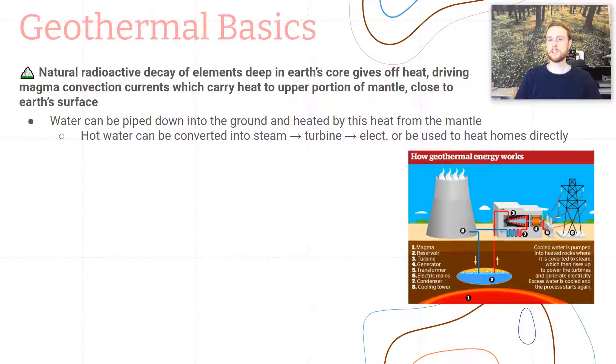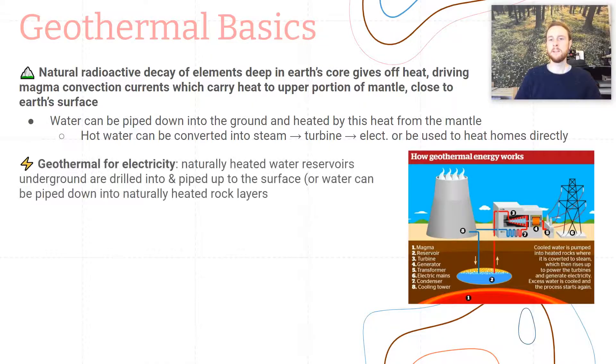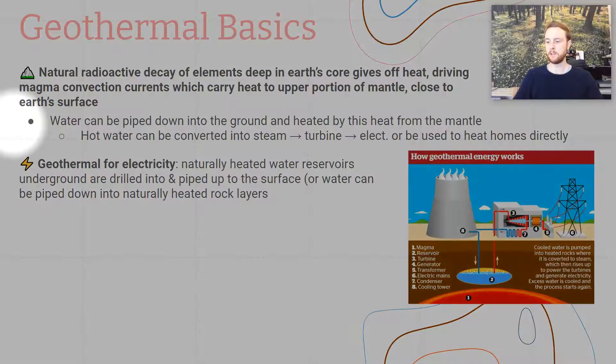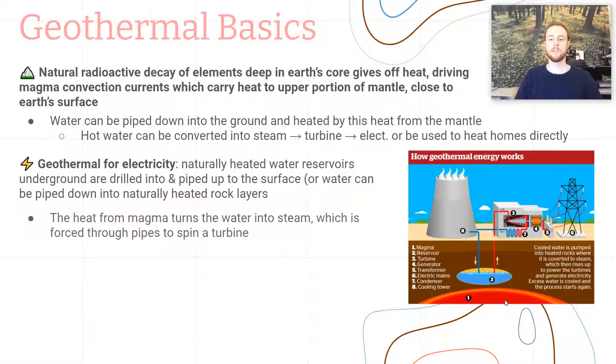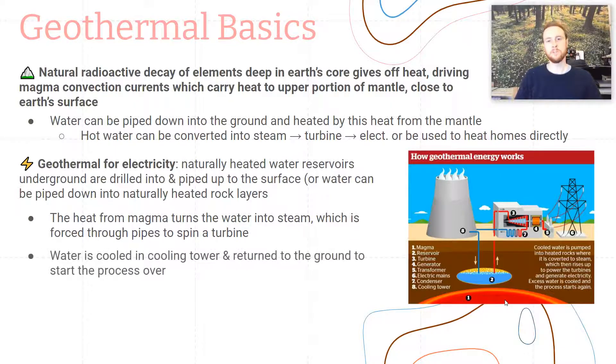So if we take a look at this diagram, this will help us understand how we specifically generate electricity from geothermal energy. We will pipe water down into these superheated rock layers, or we can access naturally occurring reservoirs of water that are deep in the ground and are naturally heated by how close they are to this magma in the Earth's mantle. And so what's going to happen then is we're going to be able to bring that water up to the surface as steam, and that steam will turn a turbine, which powers a generator to generate electricity.